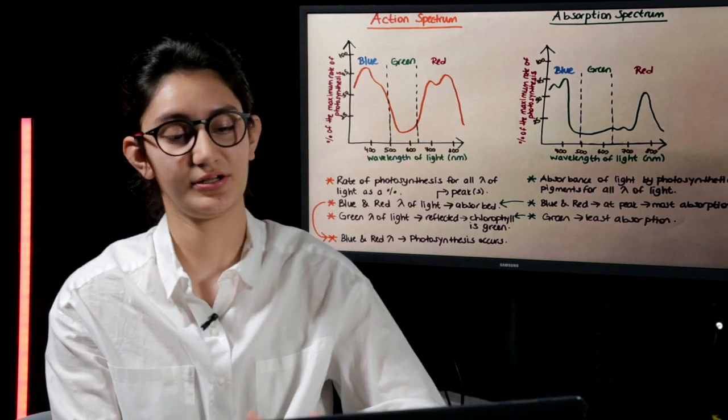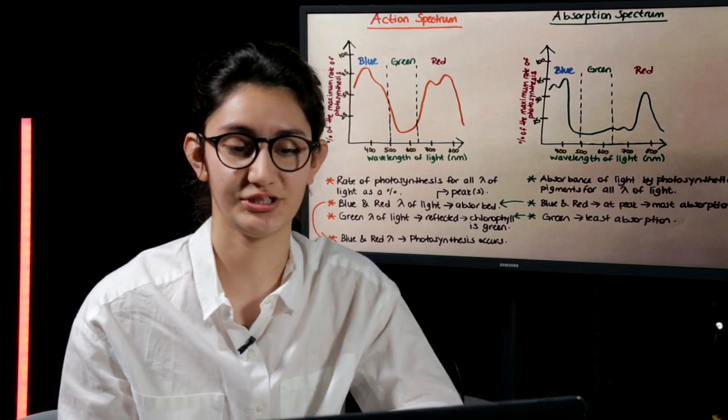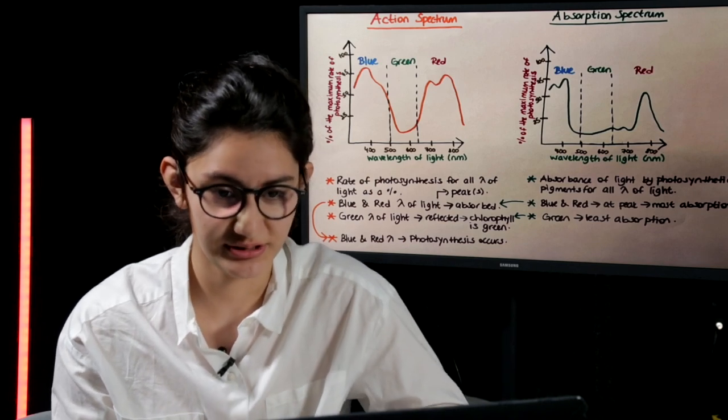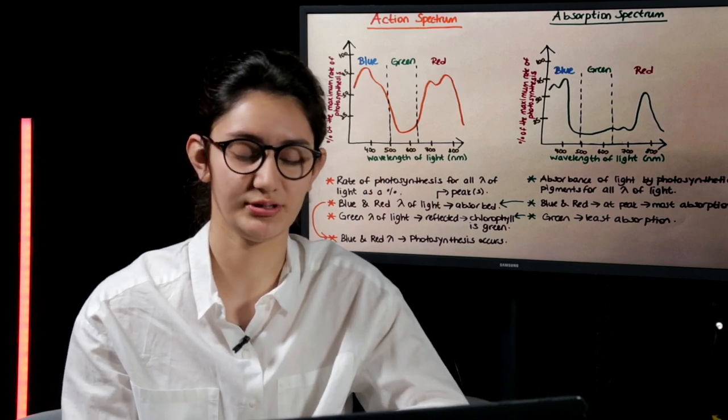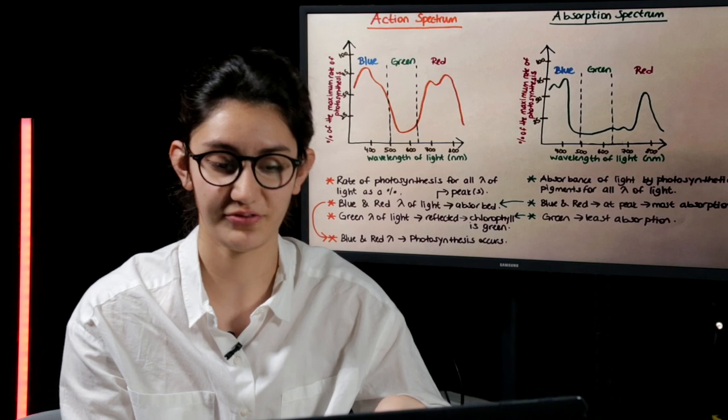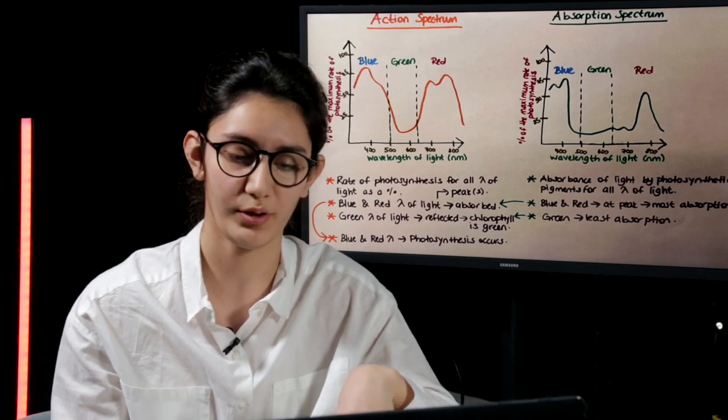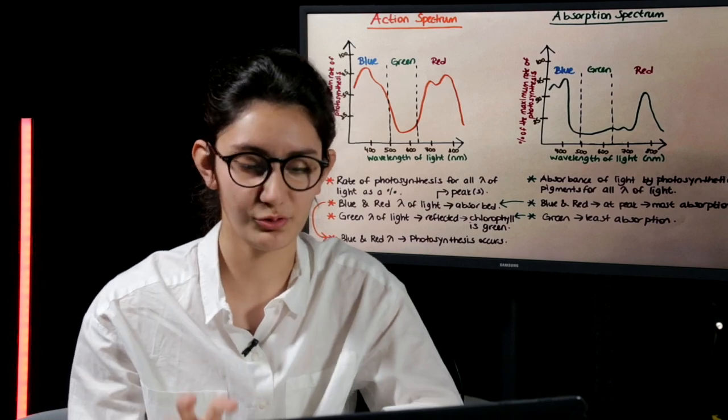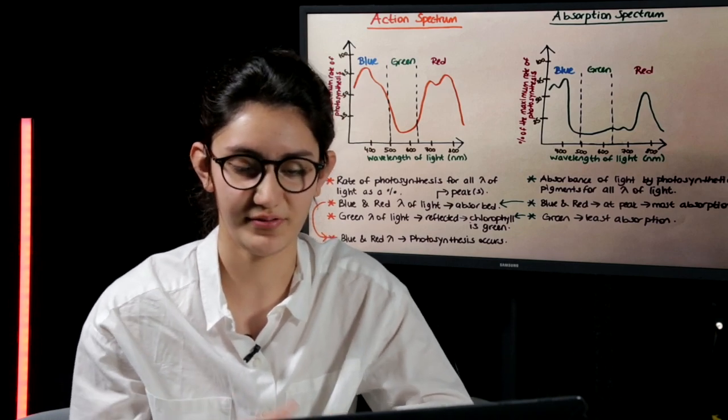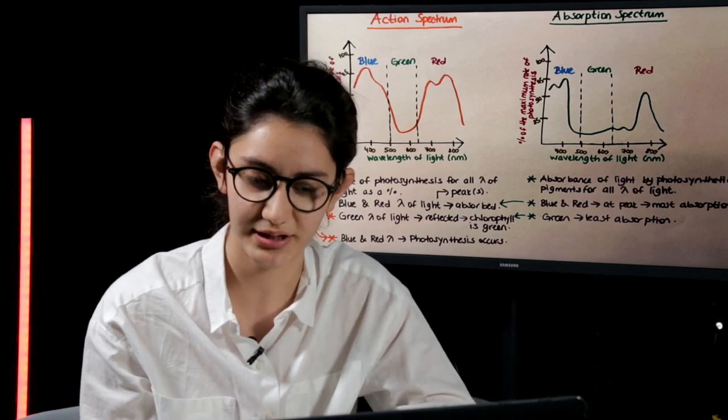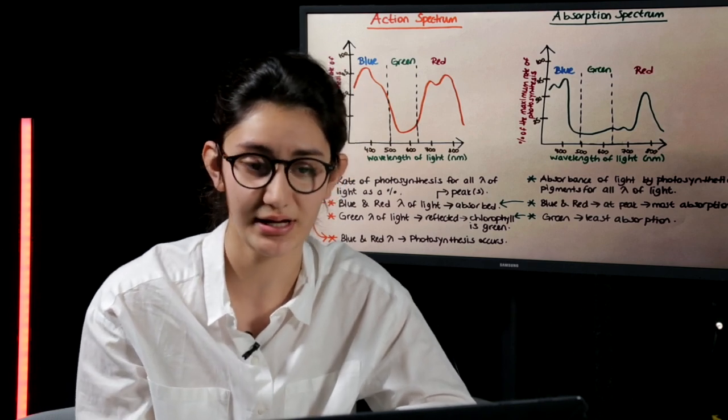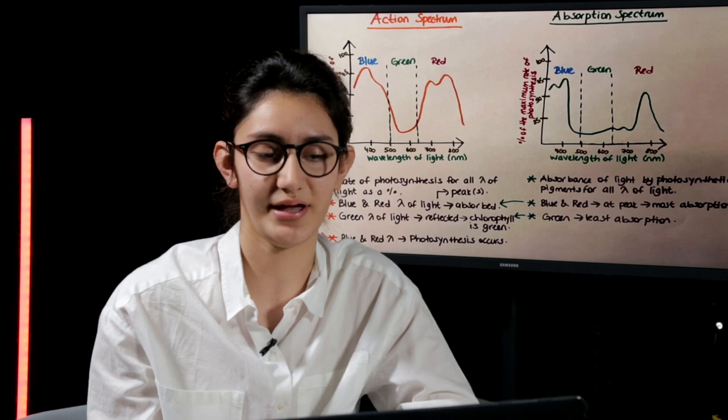When we mention chlorophyll pigment, we should also mention an absorption spectrum. This absorption spectrum shows the absorbance of light by photosynthetic pigments for all wavelengths of light. As we can see in the graph, the blue and the red sections have the highest absorption rate and the green section has the least absorption rate.